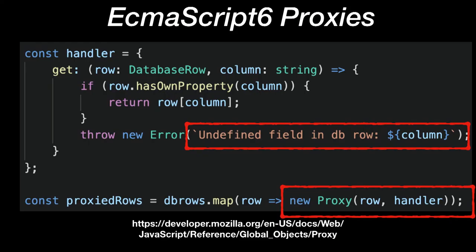If you are getting data from a database, there can be a huge difference between the type we assign and the actual columns that were fetched in the query. TypeScript cannot verify statically that the assigned types match the result of the query. To mitigate this, I use ES6 proxies to wrap around the resulting rows and throw an error on undefined fields. This way, we make sure that the fields in the type definition match exactly the columns that were queried.